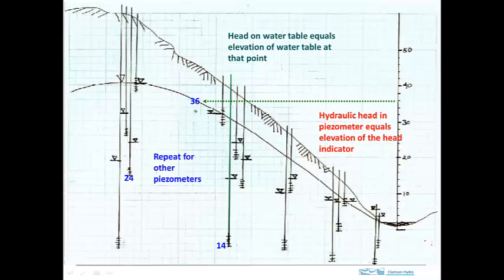So up here at the water table you can see, following the green arrow, that's the elevation, that's where the water table equals an elevation of 36. And so 36 is the hydraulic head at that position along the water table.